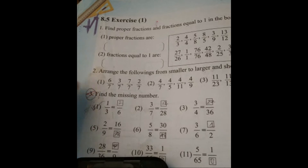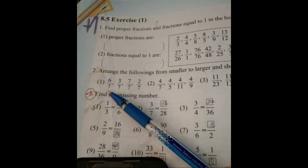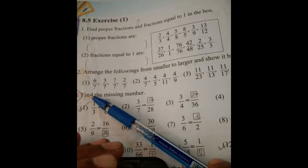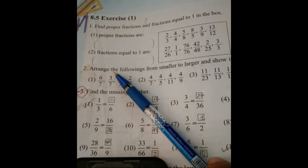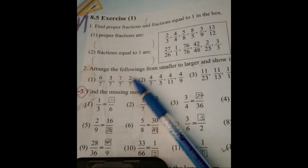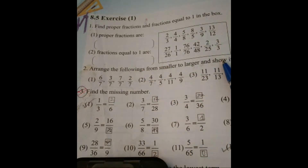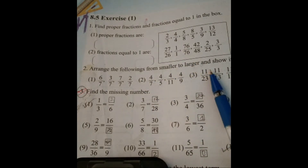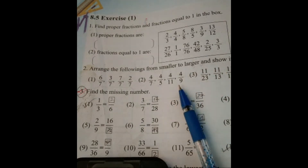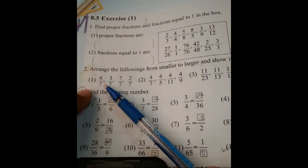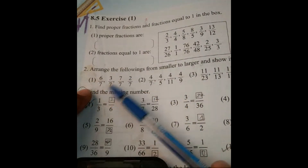Now we have to revise the next number. We need to arrange the following fractions from smaller to greater and show it by symbols. That means we have to write the comparison symbols.